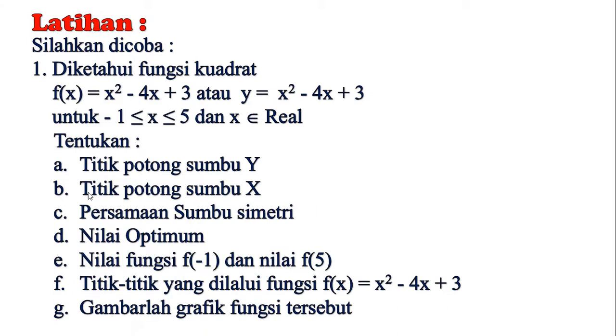Apa saja, maka kita ditanya tentukan berarti kita harus menghitung titik potong sumbu x, titik potong sumbu y, persamaan sumbu simetri, nilai optimumnya, kemudian nilai fungsi f(-1) atau nilai fungsi dan nilai fungsi f(5), kemudian titik-titik yang dilalui oleh itu. Nah kita susun titik-titik yang dilalui itu, kemudian kita gambar titik-titik itu dalam koordinat cartesius, kemudian kita hubungkan menjadi sebuah grafik parabola.